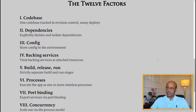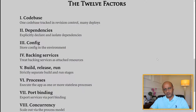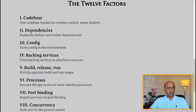Factor four is backing services: treat backing services as attached resources — straightforward and self-explanatory. Factor five is build/release/run: strictly separate build and run stages. When software changes go through the pipeline, there's a code build and then you run the build to see if everything works or if there are errors. Separate the build stage from the run stage so it's easier to identify what's going on with your code.